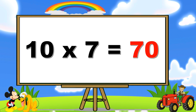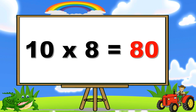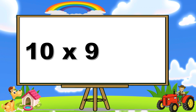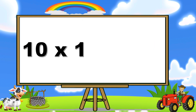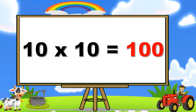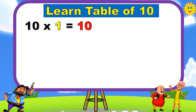Ten seven's are seventy. Ten eight's are eighty. Ten nine's are ninety. Ten ten's are one hundred.